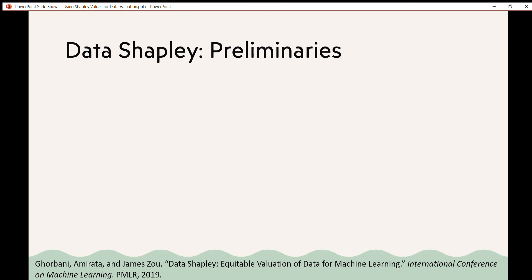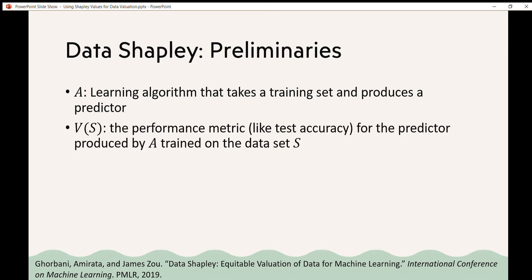So moving on to data Shapley, we need to establish a few definitions. We can say A is a learning algorithm that takes a training set and produces a predictor. V of s is the performance metric for the predictor produced by A trained on the dataset s. This can be any performance metric. The authors suggest using test accuracy.